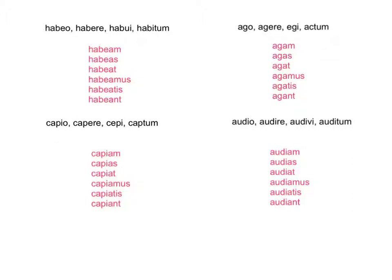And then for fourth: audio, audire, audivi, auditum — to hear. We're going to take AUD, and then we beat all giant liars — IA from 'liars': audiam, audias, audiat, audiamus, audiatis, audiant.